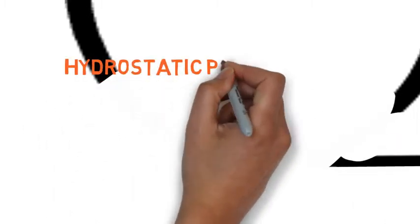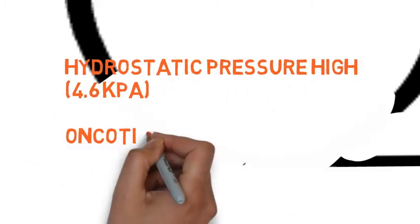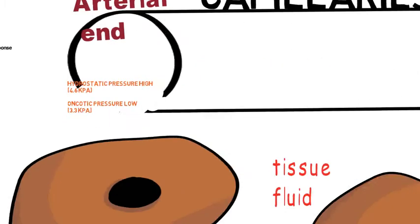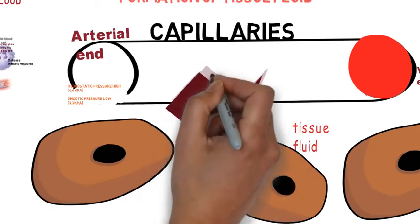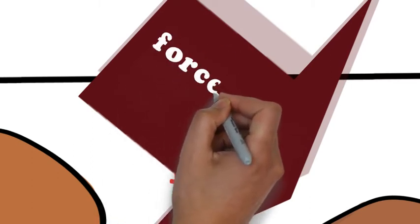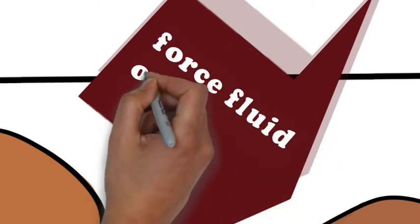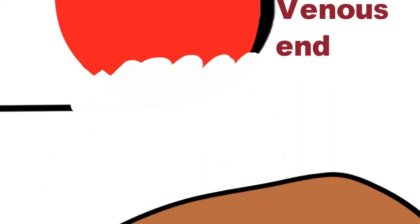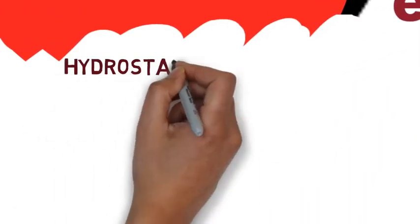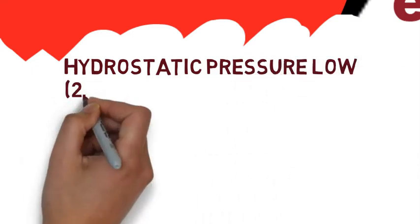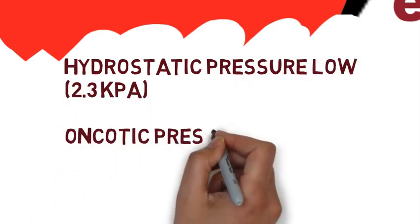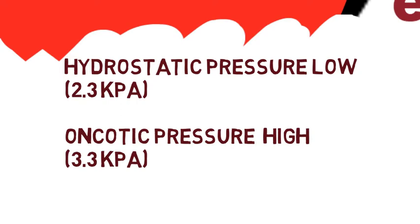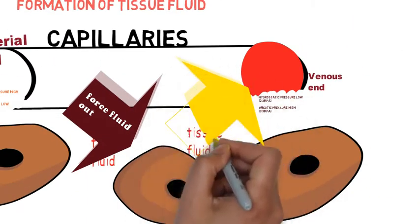At the capillary arterial end, hydrostatic pressure is very high but the oncotic pressure is not so high. As a result blood fluid is forced out of the capillaries. At the venous end hydrostatic pressure is low, 2.3 kilopascal, and the oncotic pressure is 3.3 kilopascal, high.